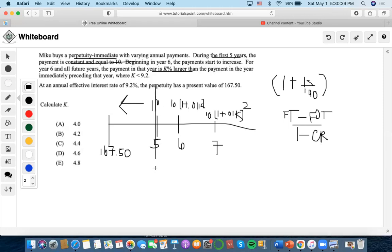We can divide this into two parts. There's a constant payment of 10. We're going to choose a comparison date at time five because increasing starts right after time five.